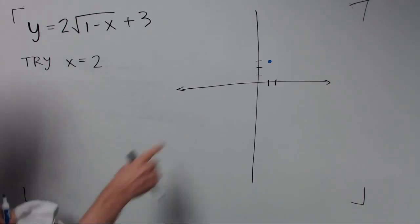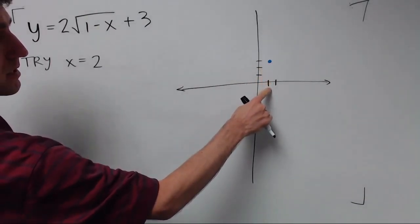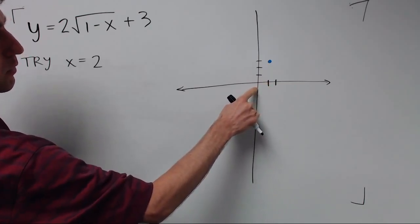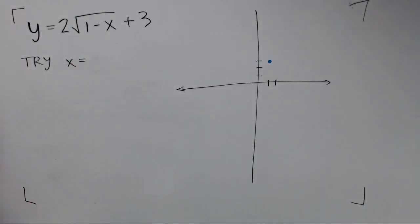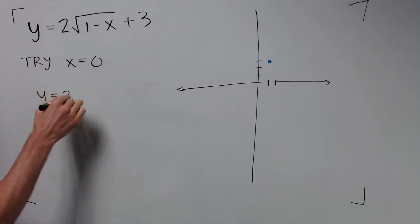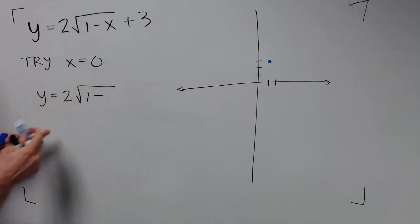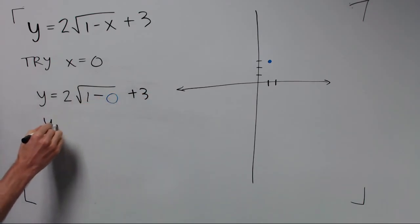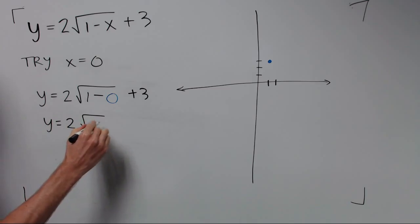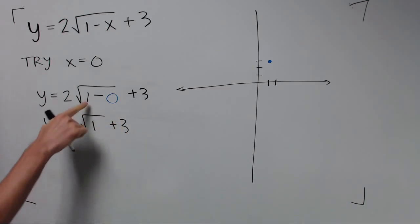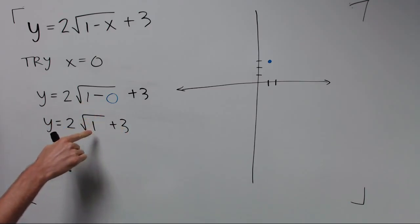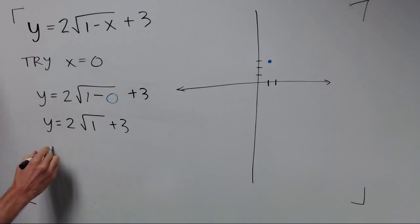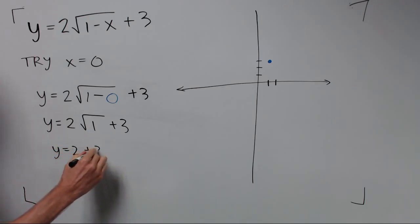So going to the left, we're at x equals 1. Going to the left would be x equals 0. Now we're going to try x equals 0. Alright, 1 minus 0 is 1. Square root of 1 is 1. 2 times 1 is 2. And so we get 5.